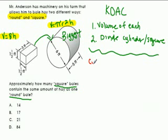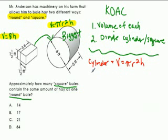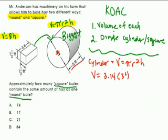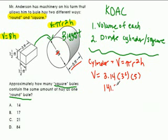Let's start with the cylinder. Volume equals πr²h. Pi is 3.14. The diameter is 6, so the radius is 3. The height is 5 feet. On your calculator, type in 3.14 times 3 squared times 5, and you should get 141.3.